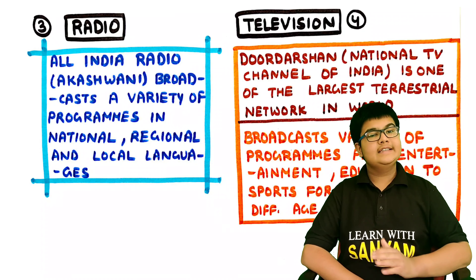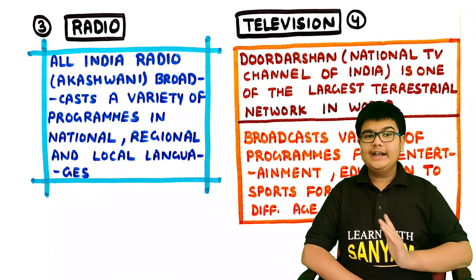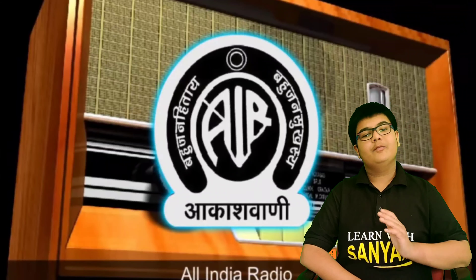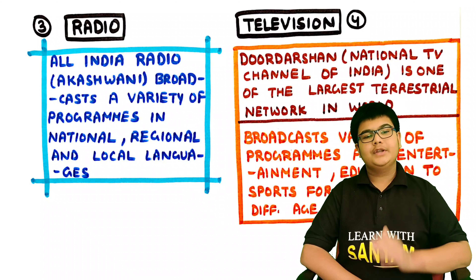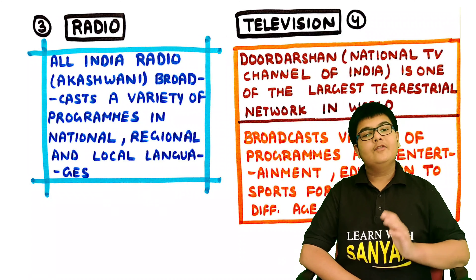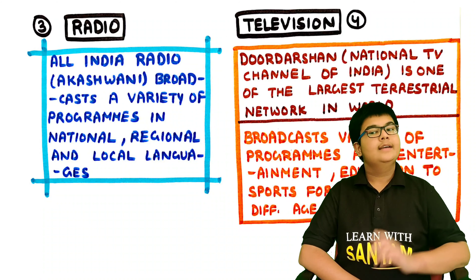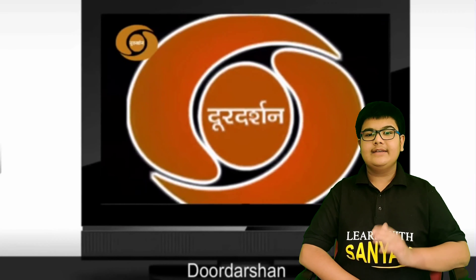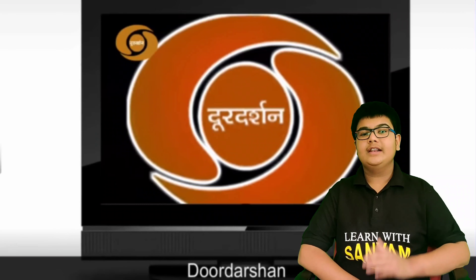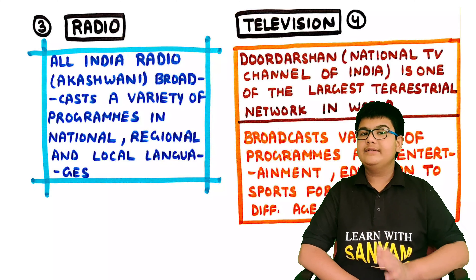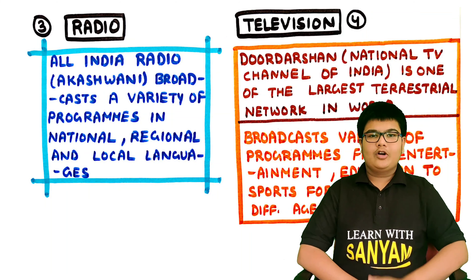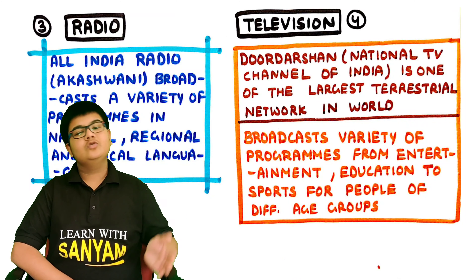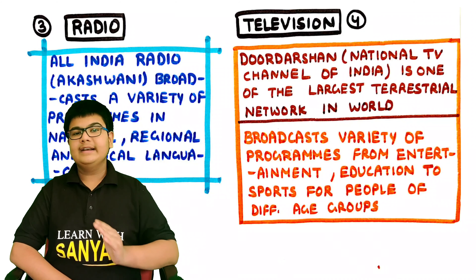The third mode is Radio. The All India Radio, Akashwani, broadcasts a large variety of programs in national, regional and local languages for a variety of age groups. Fourth, Television. Doordarshan, the national TV channel of India, is one of the largest terrestrial networks in the world. It broadcasts a variety of programs from entertainment to education to sports for people of different age groups.